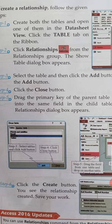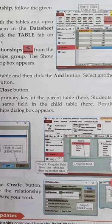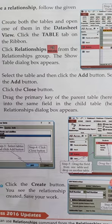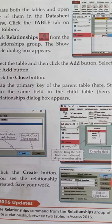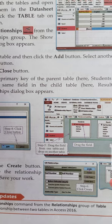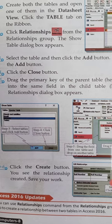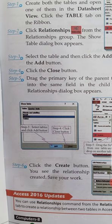Click the Close button. Drag the primary key of the parent table — here, the student table — and drop it into the same field in the child table — here, the result table. The Relationship dialog box appears. We are using roll numbers; drag the field from one table and drop it on another table using roll numbers. Step 6: click the Create button. We see the relationship is created. Save our work.